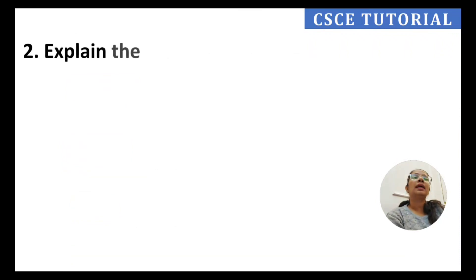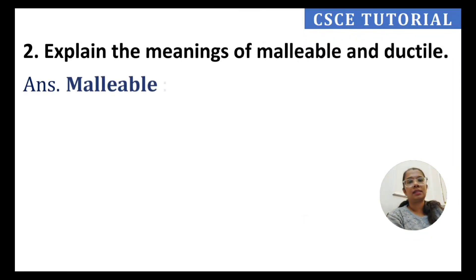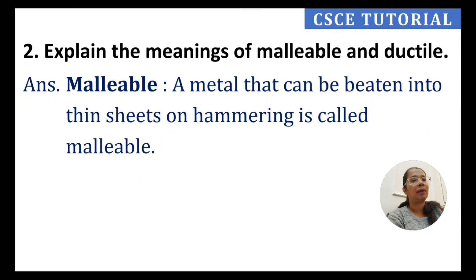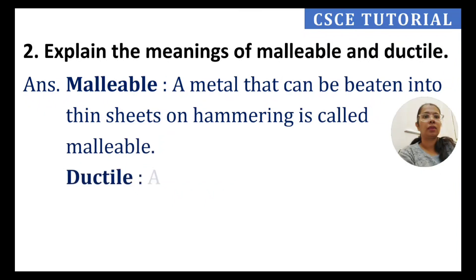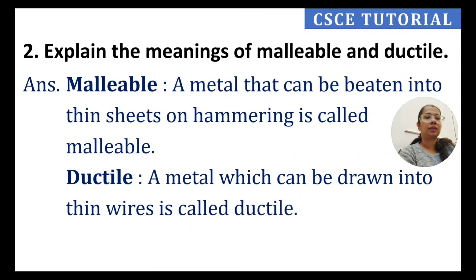The second question asks to explain the meanings of malleable and ductile. A metal that can be beaten into thin sheets on hammering is called malleable. A metal which can be drawn into thin wires is called ductile.